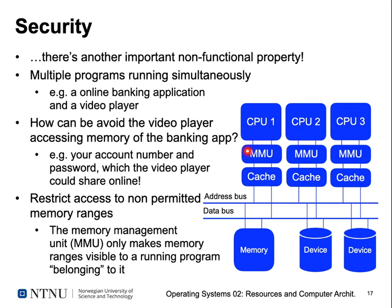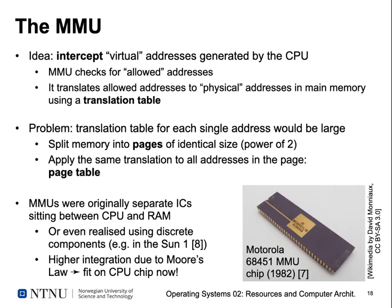The MMU sits between our CPU and our memory. Each CPU has its own MMU, and depending on the process running on that CPU, there is a configuration in the MMU that determines which areas of memory can be accessed. The operating system must correctly configure it to ensure security. The MMU intercepts addresses generated by the CPU — these are called virtual addresses because they no longer directly refer to physical addresses in main memory — checks if access to an address is allowed, and then translates permitted addresses to real physical addresses using a translation table.